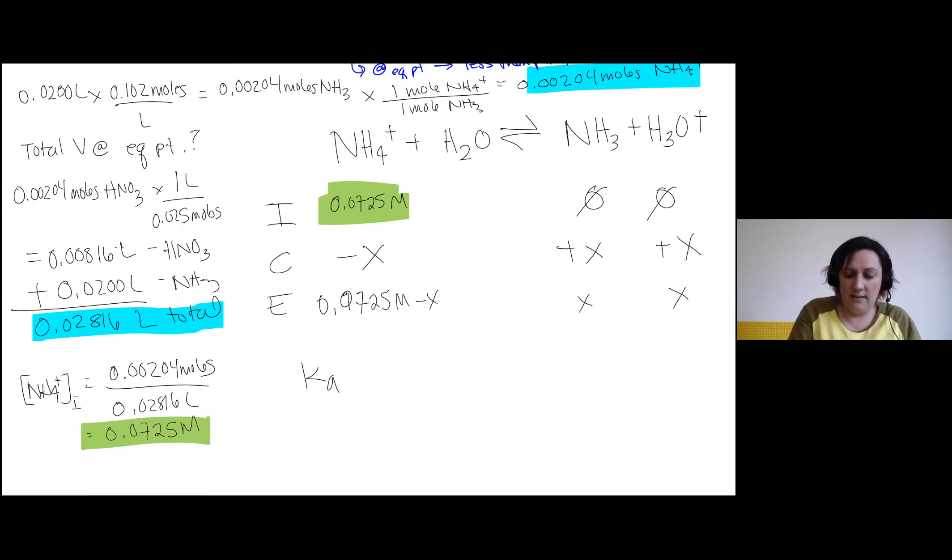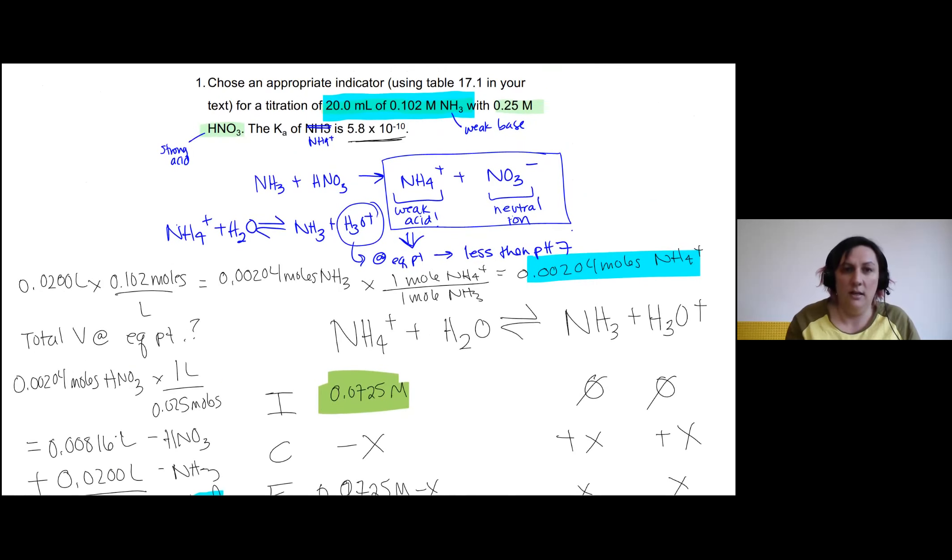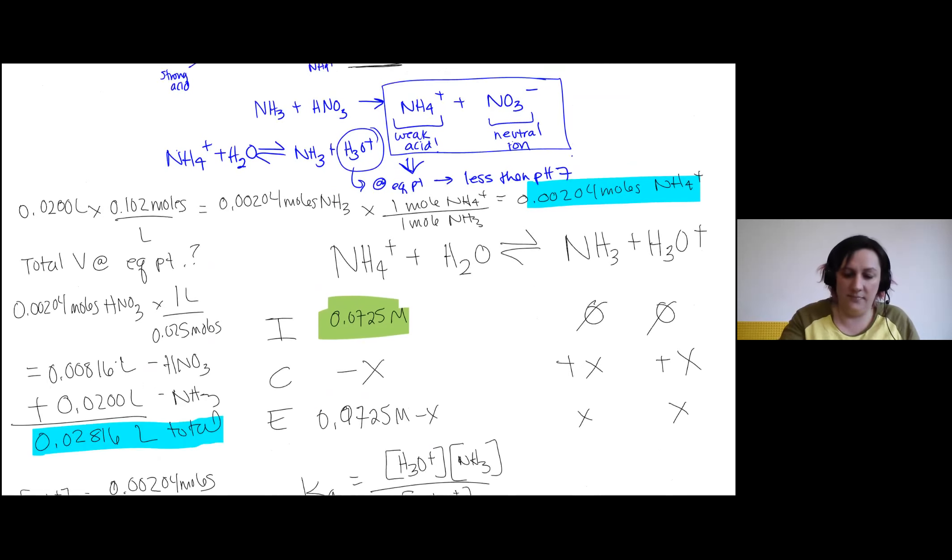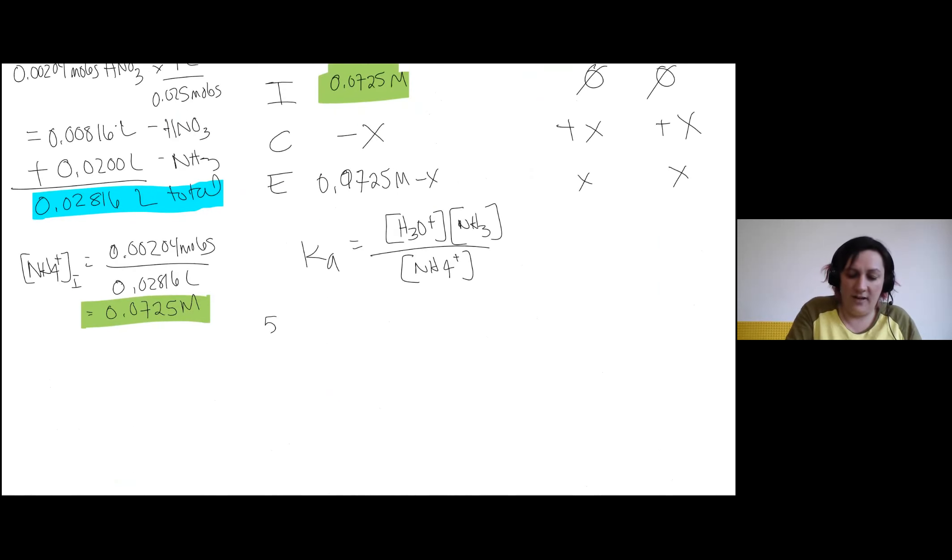So our Ka is going to be equal to the concentration of our products divided by our reactants, not including our solvent water. And we're given that, so back here, we're given that Ka value, right? Of 5.8 times 10 to the negative 10. So we can plug that in 5.8 times 10 to the negative 10. And we can plug in our equilibrium values. So we'll have X squared divided by 0.0725 minus X. And now we need to solve for X.